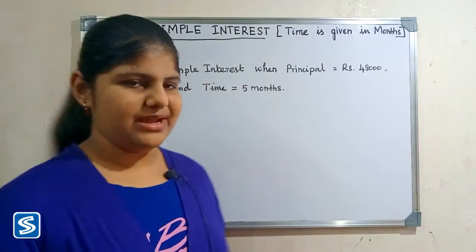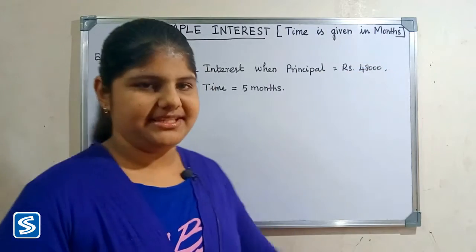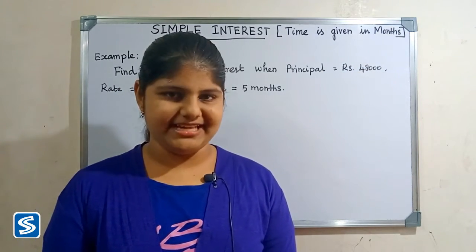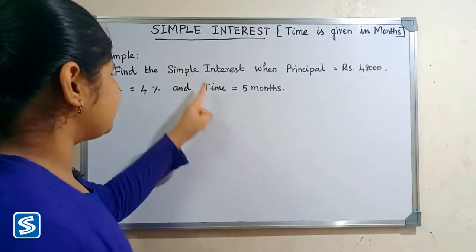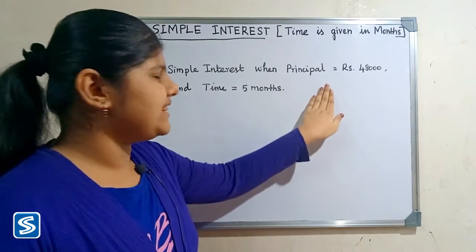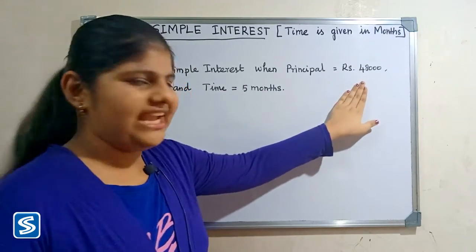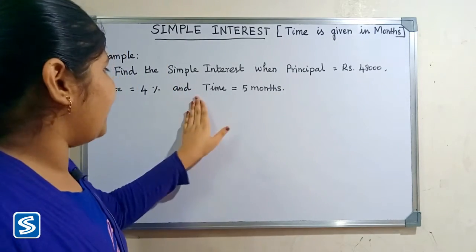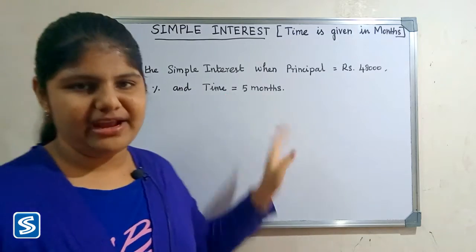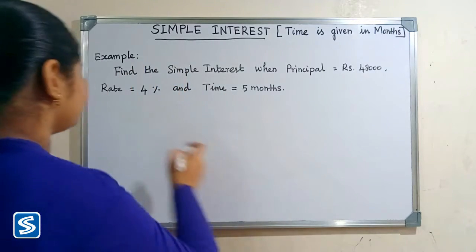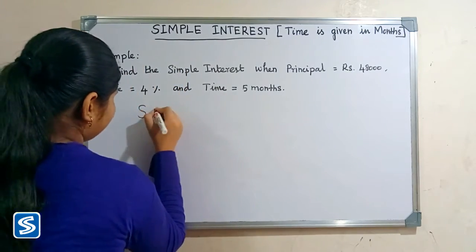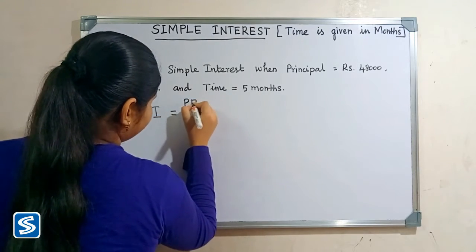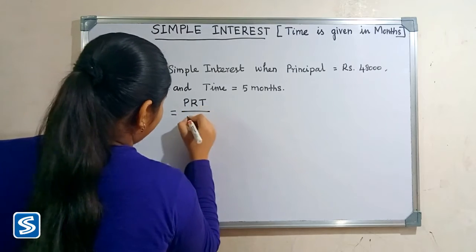How to find simple interest when the time is given in months. Now we will take some examples. We know that simple interest is equal to PRT divided by 100.